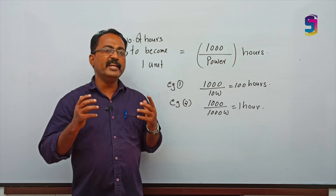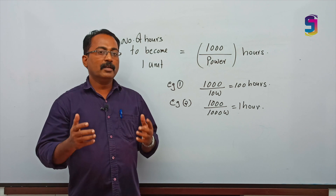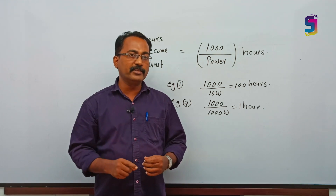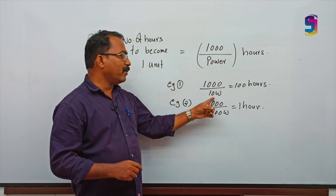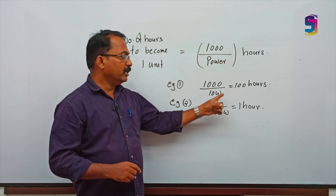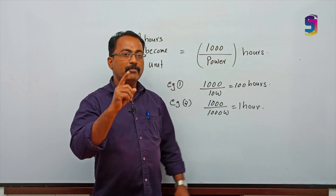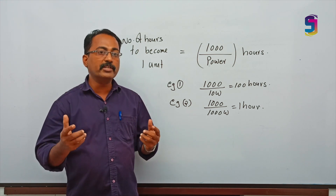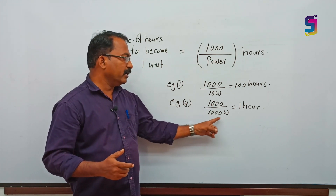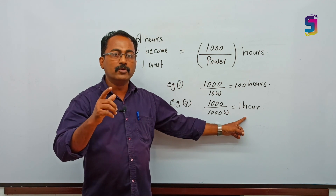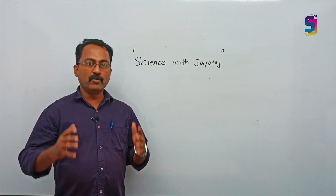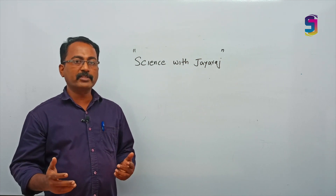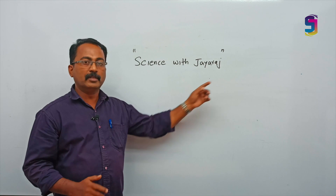For example, if you have an LED bulb of 10 watt: 1000 divided by 10 equals 100 hours — it will take 100 hours to consume one unit of electricity. If you are using an AC of 1000 watt: 1000 divided by 1000 equals 1 hour — it will take only one hour to consume one unit. For more such informative videos, please subscribe to our channel Science with Jayraj. Thank you.